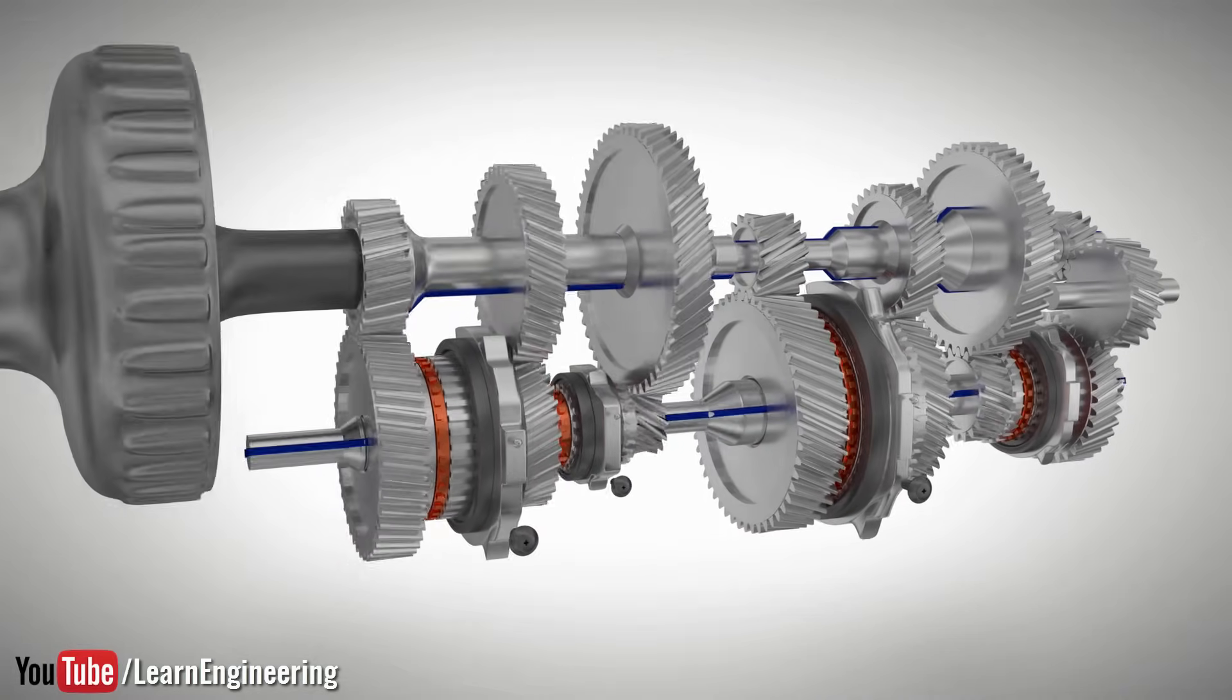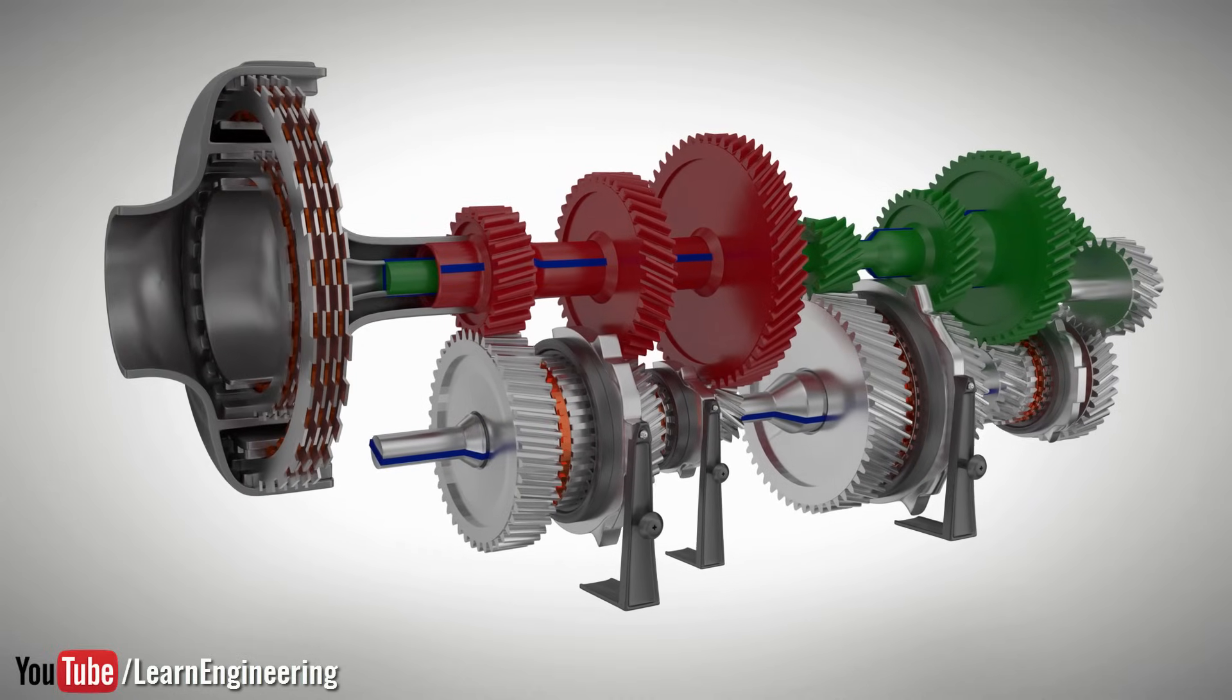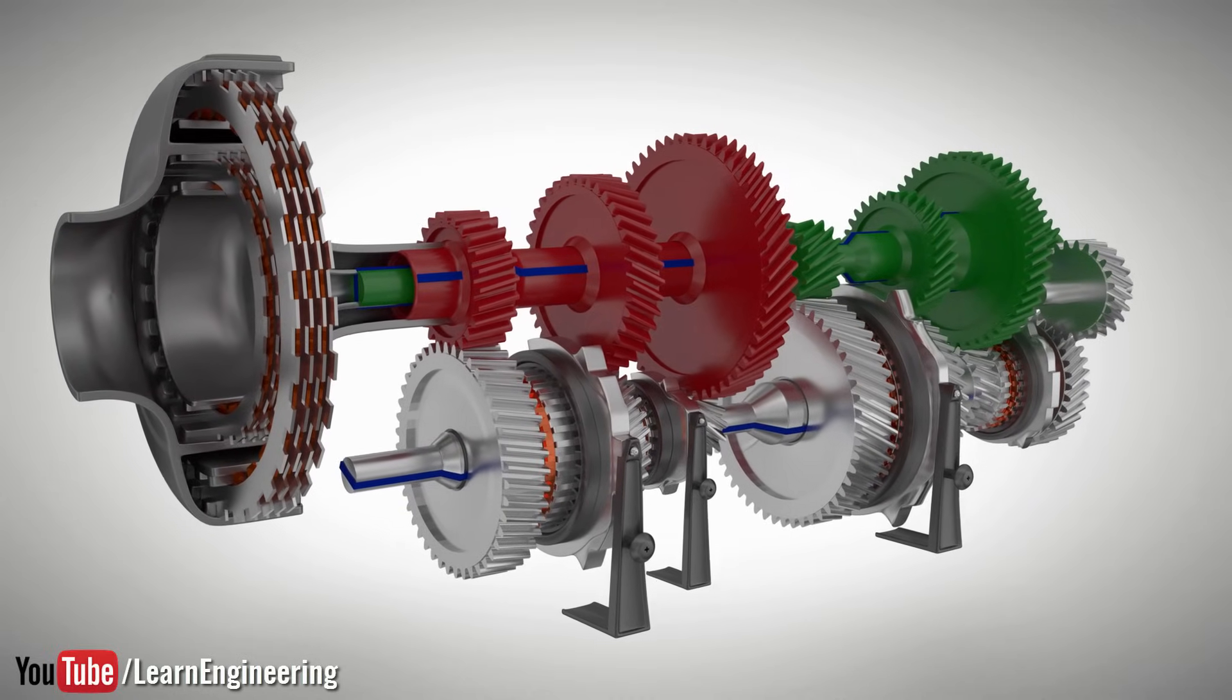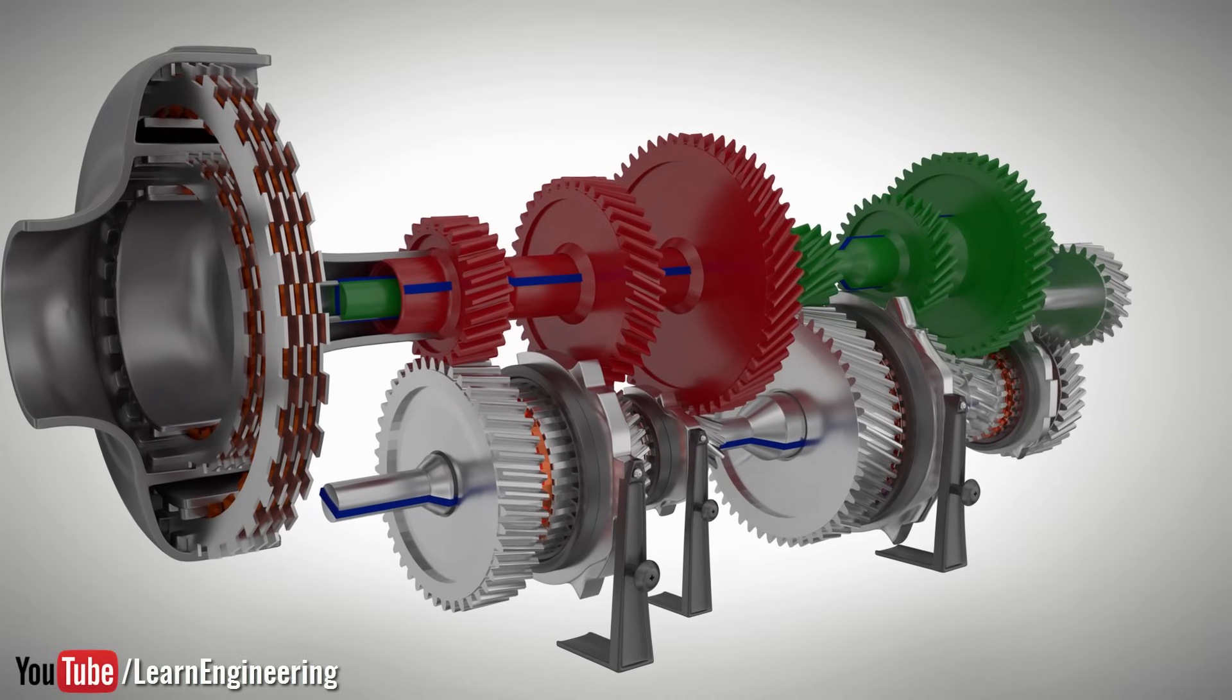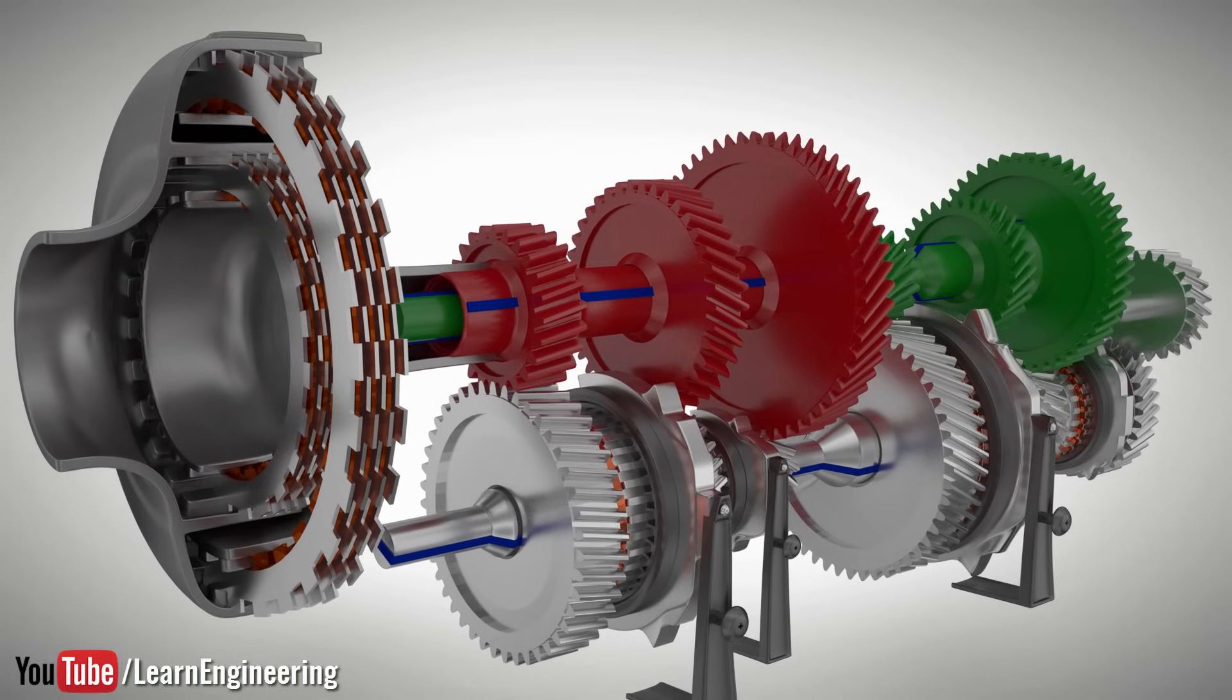Dual Clutch Transmission is in fact two independent manual transmissions controlled by a computer. To understand how this arrangement offers the smoothness of an automatic transmission, let's first explore the inner workings and the drawbacks of a regular manual transmission.